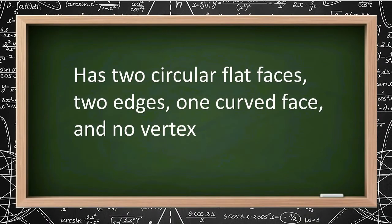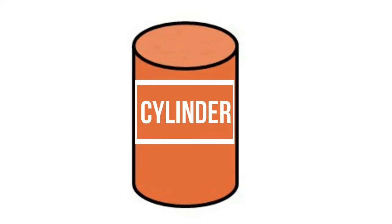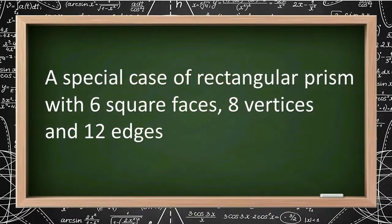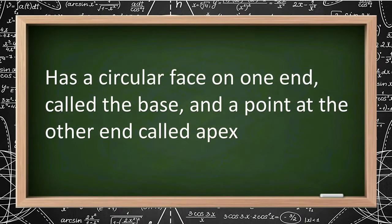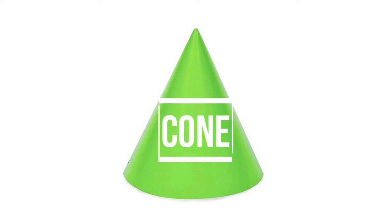It has two circular flat faces, two edges, one curved face and no vertex. You are right! A cylinder. How about a special case of rectangular prism with six square faces, eight vertices and twelve edges? You nailed it! A cube. It has a circular face on one end called the base and a point at the other end called the apex. Super! It's a cone.